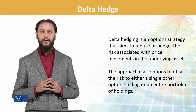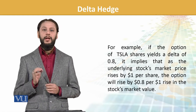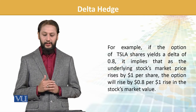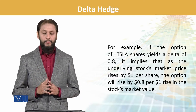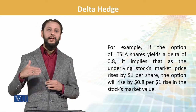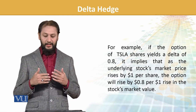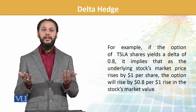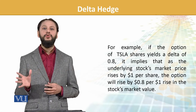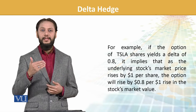For example, if an option on Tesla's share yields a delta of 0.8, it implies that as the underlying stock price moves by $1, the option will rise by $0.80. So if delta is 0.8, a one-dollar change results in a 0.8 change in the option. This tells you how many options you need to hedge your position — if you have 500 stocks, 500 options won't be enough because the delta is less than 1.